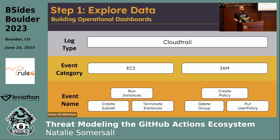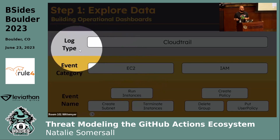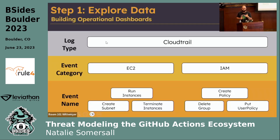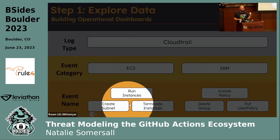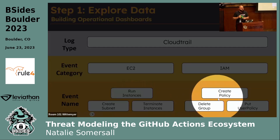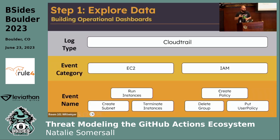You'll also notice there are fields that go across all logs. For AWS, that would be something like source IP address or event name — these are going to exist everywhere. This will come back into play later. As you get down into more specific logs like 'run instance,' there's obviously going to be an instance type field, whereas in 'create policy' there probably won't be. We'll talk about what we do with those specific fields versus the more generic ones.